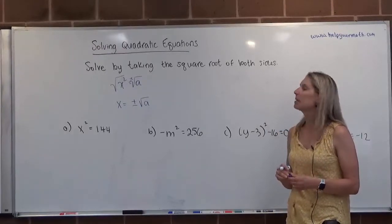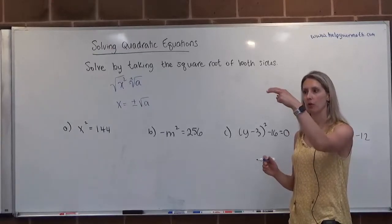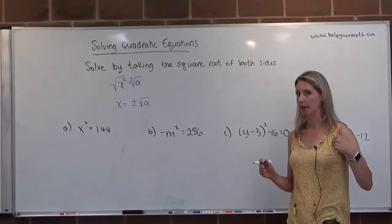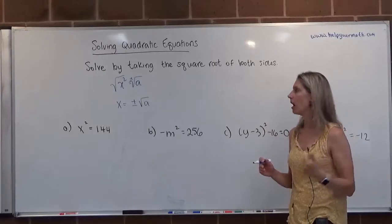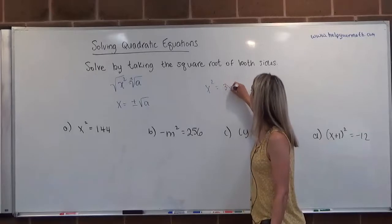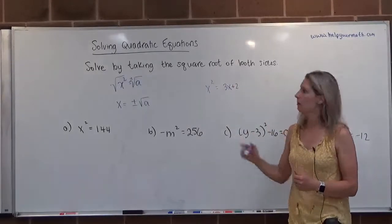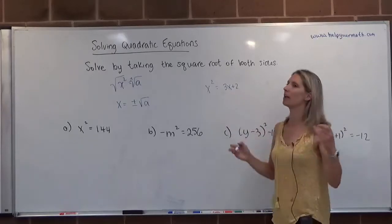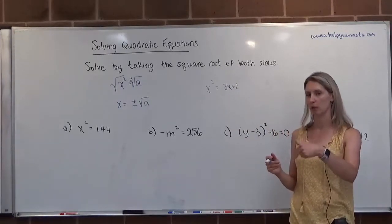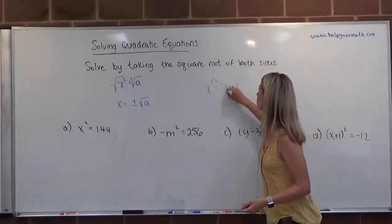The only time we can use this method of taking the square root is when we have one term squared and the other term doesn't contain that variable. So if we had something like x squared equals 3x plus 2, we cannot use the square root method because we have an x on the other side and there's no way of getting rid of just that x term. It only works when there's one term that's squared and the other term is almost always a constant.